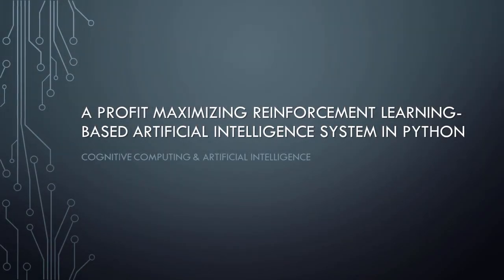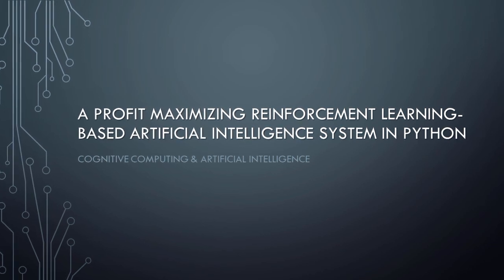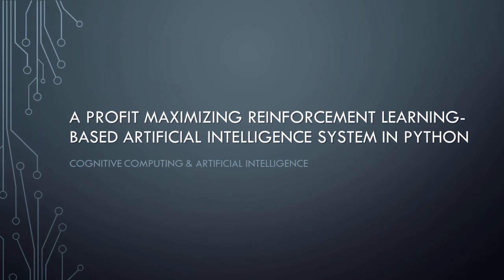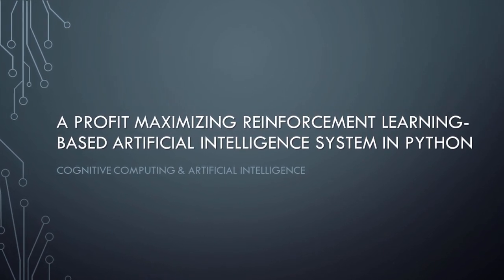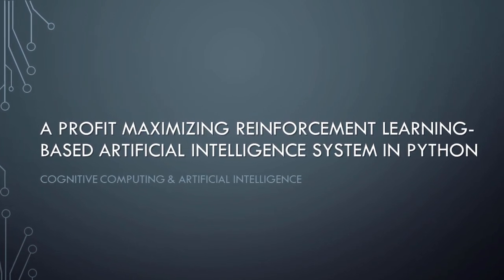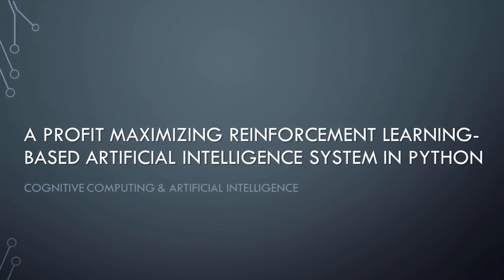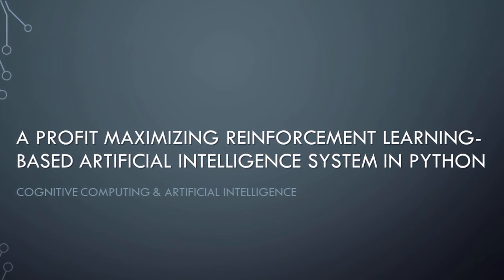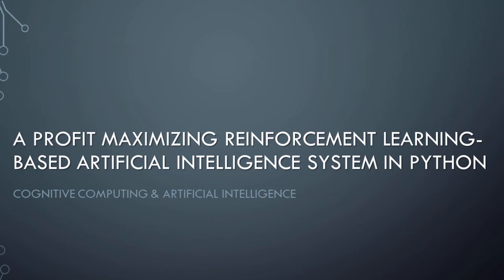Good day everyone, this is Dr. Soper here, and today we'll be working through a complete example in Python that demonstrates how a reinforcement learning based AI system can be used to maximize corporate profits in a complex scenario involving multiple options and millions of customers. The techniques used in this video were introduced and discussed in detail in the previous lessons in this series, so if you haven't yet had a chance to watch those previous videos, I would highly recommend that you do so before watching this video.